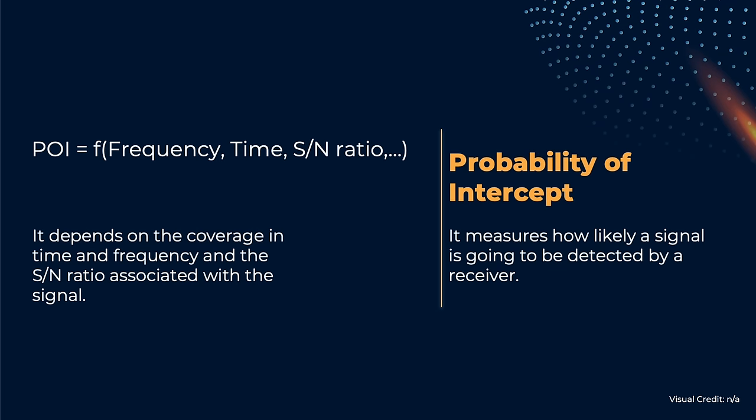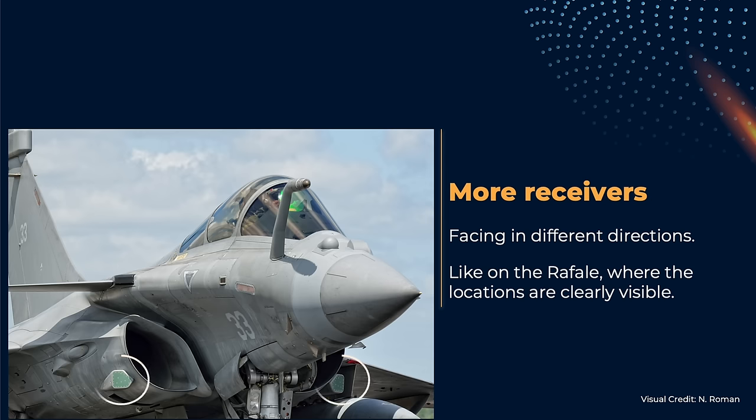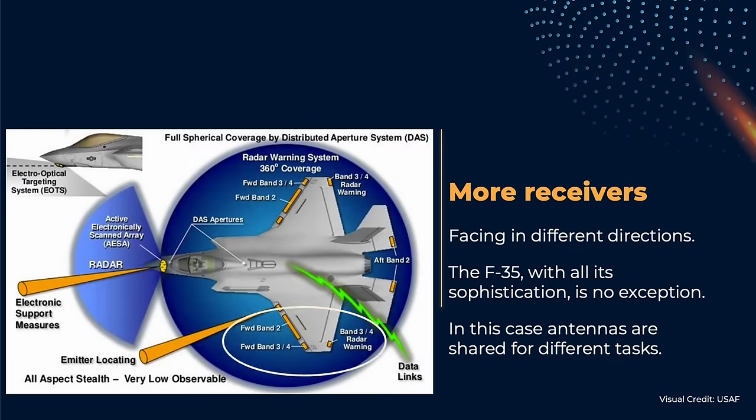So it is clear that a single receiver cannot cover all the frequencies all the time. The probability of intercept is a concept that measures how likely is a receiver to intercept a signal. Modern receivers are very, very efficient. They may have probability of intercepts very high, above 90%, but they're not perfect, and they will probably never be. So the solution to this problem is to have more than one receiver, possibly with different antennas, facing in different directions. Even a very modern system like the F-35 has at least three sets of antennas dedicated to three different bands, and it could even be five if you count the direction-finding antennas and the radar that can be used passively.